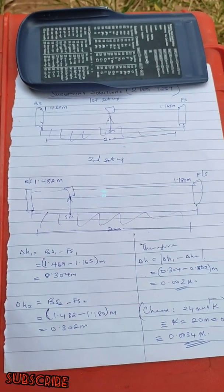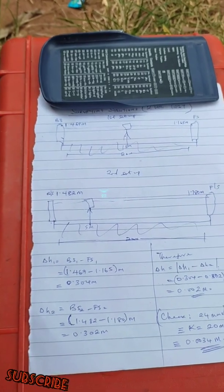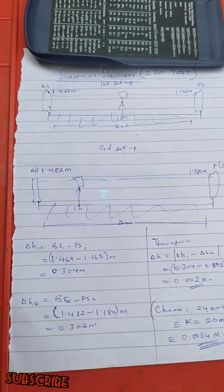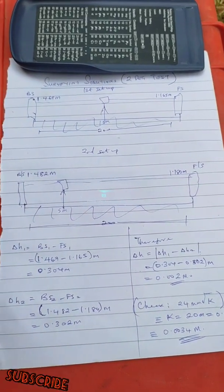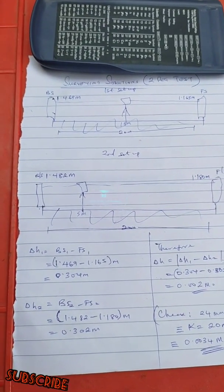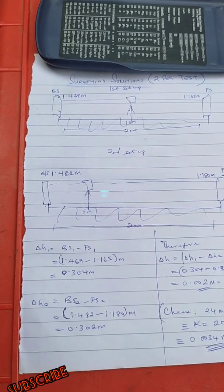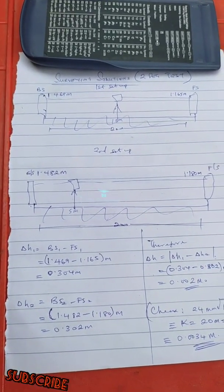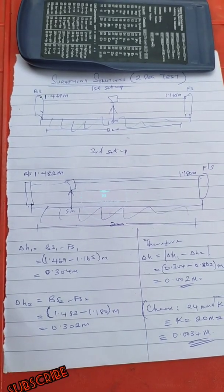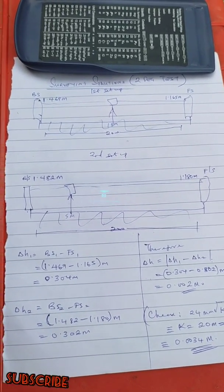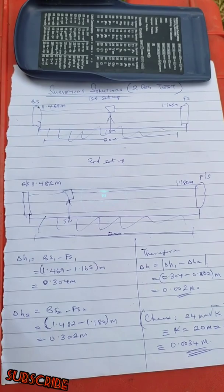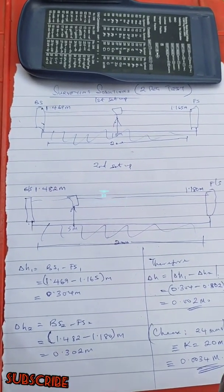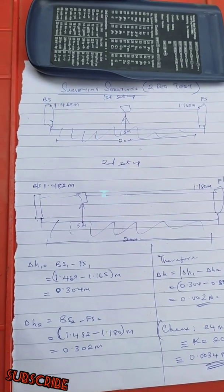All right, we have actually done the field observation. These were the values we got: the instrument was on the 10 meter mark, the staff reading to our backsight was 1.469 meters, and the staff reading to our foresight was 1.165 meters. So as we said earlier, you are going to move the instrument very close to one of the points, and we moved it to the fifth meter, which in this case was the second setup.